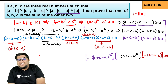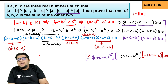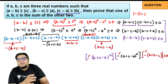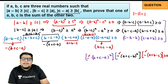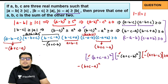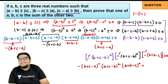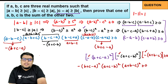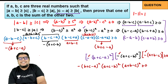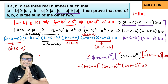Combining all three, and multiplying the three negative signs together, the entire product becomes: minus of (b plus c minus a) squared times (a plus c minus b) squared times (a plus b minus c) squared, and this must be greater than or equal to zero.